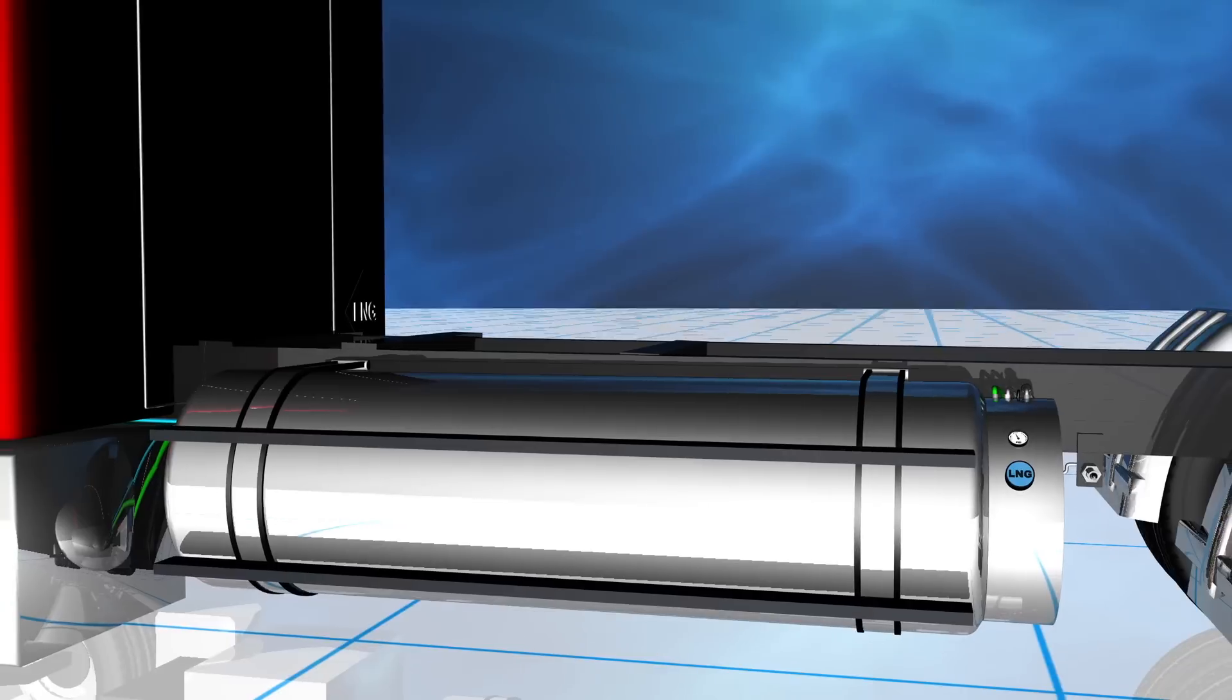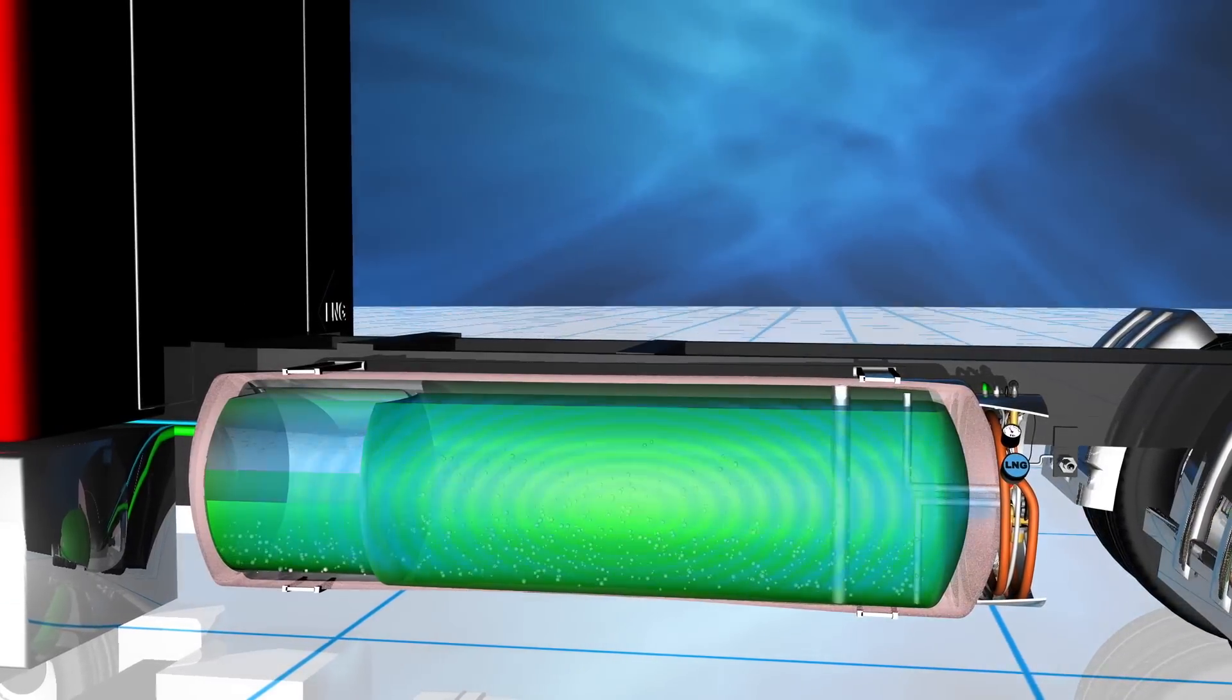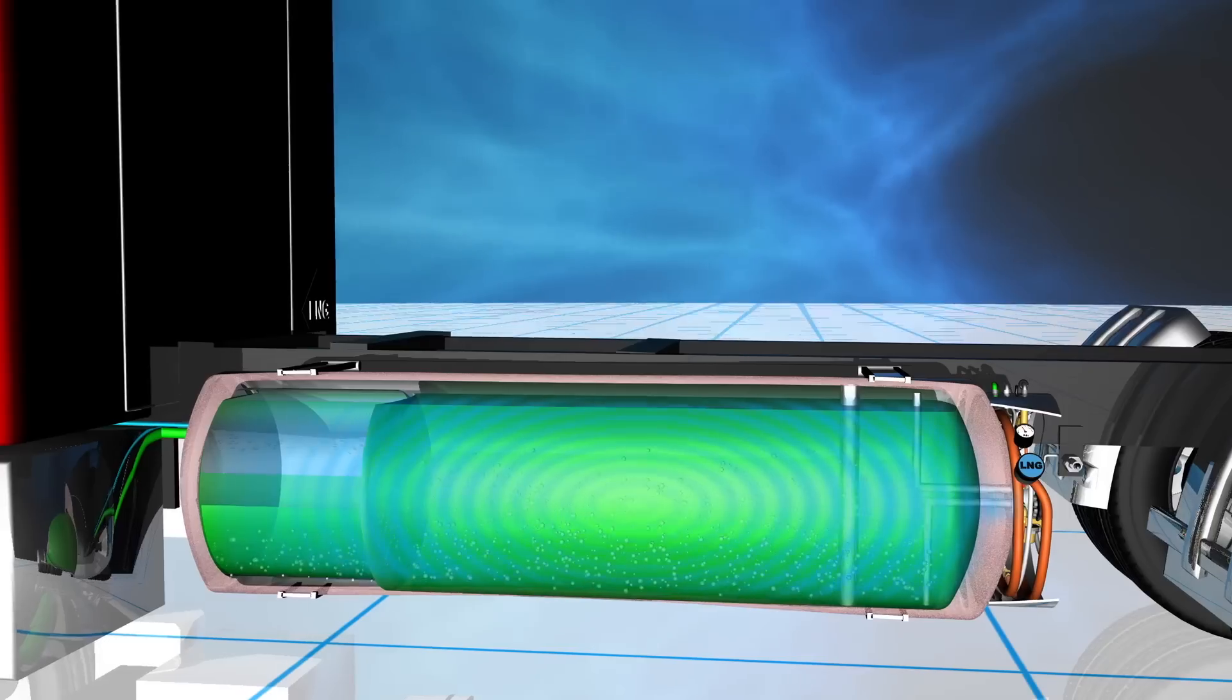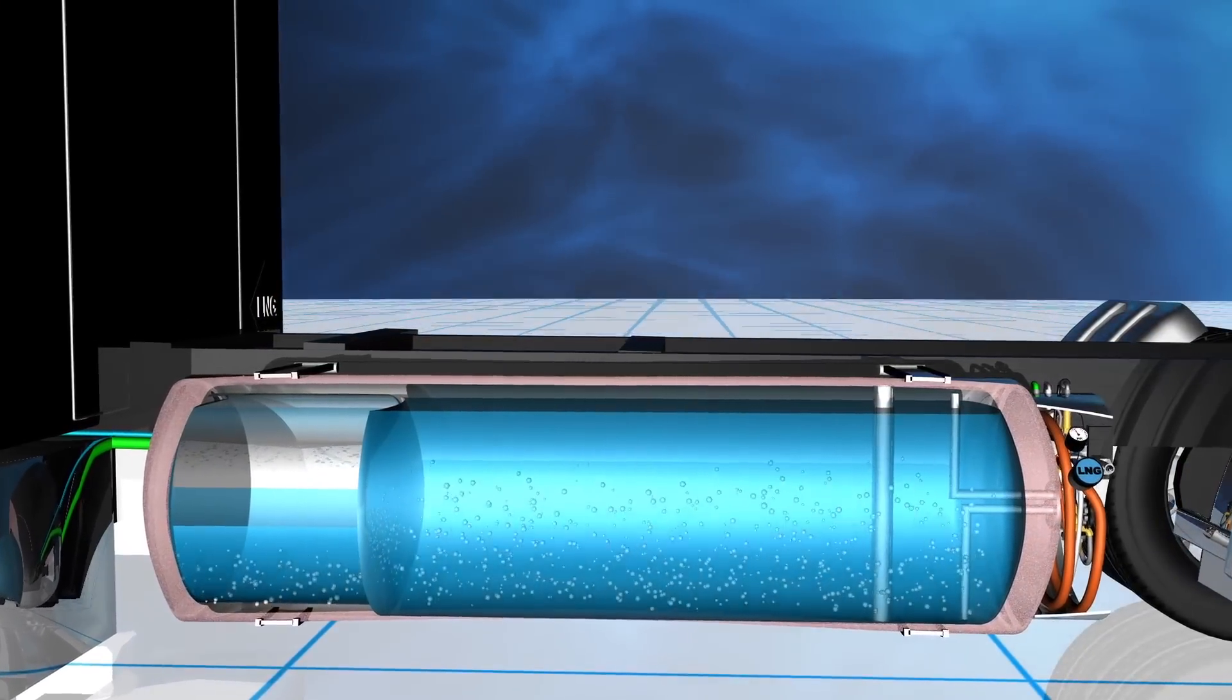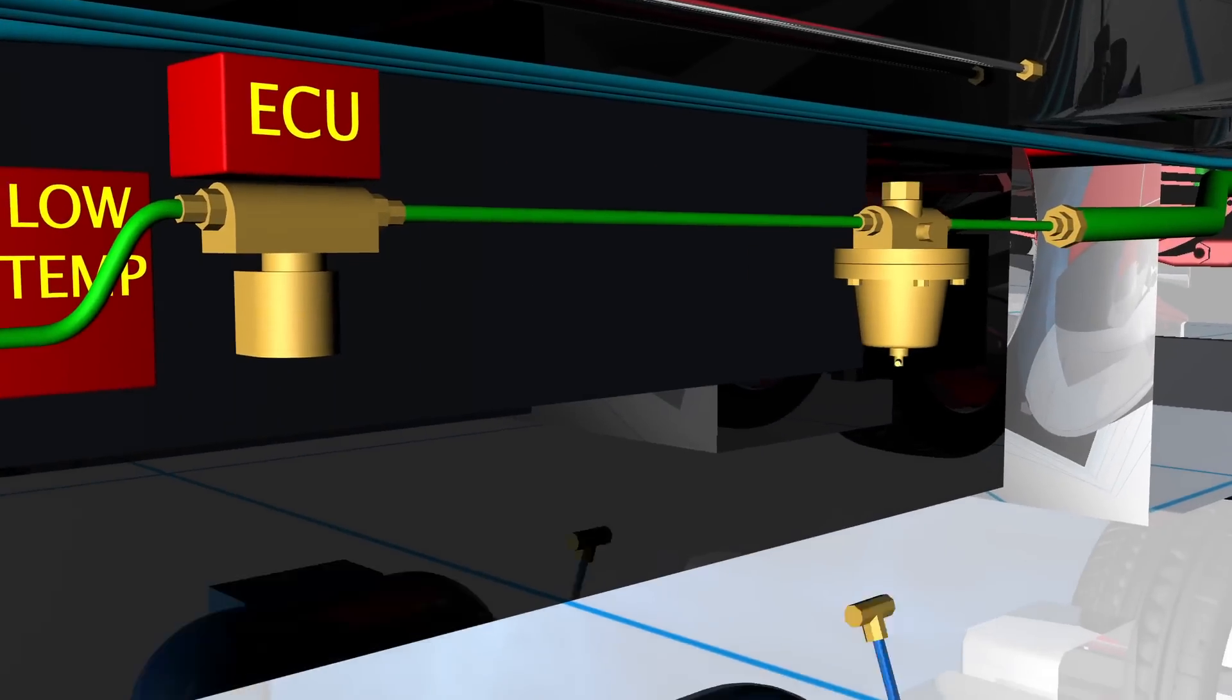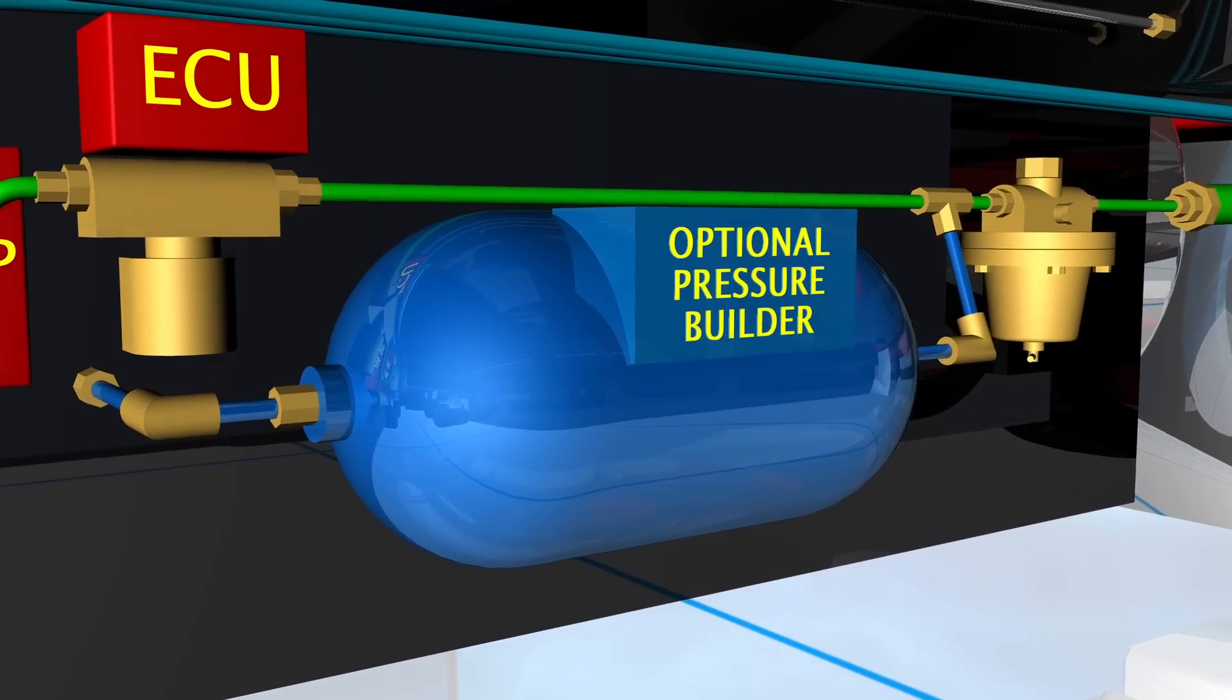Agility's standard LNG systems do not include a fuel pump. Instead, the tank pressure is used to feed fuel to the engine. No additional pressure boost is needed. When using blue fuel, however, Agility's optional cold fuel pressure builder is used to boost system pressure to provide the engine with adequate fuel.